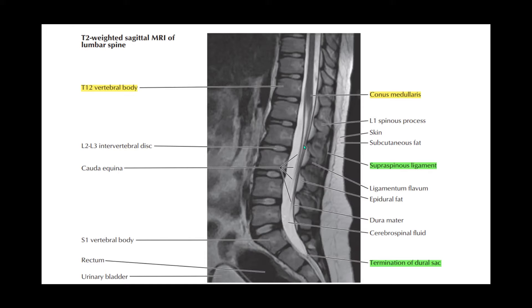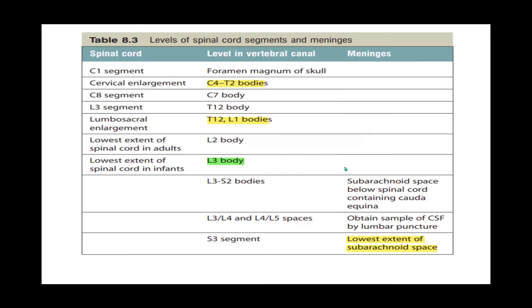Below the conus medullaris, we can see fibers of the spinal cord which constitute the cauda equina. We can also see our vertebral bodies and intervertebral discs. Let's go into further details of the spinal cord.